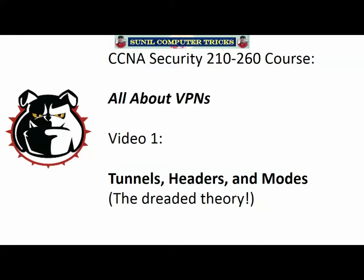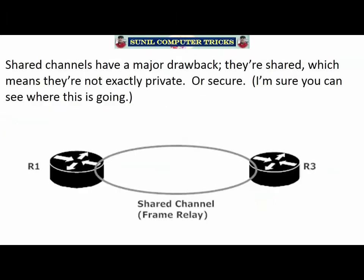The first question — maybe the first question you have — is why we VPN in the first place. The reason is that the shared channels we generally use between routers, between WANs or over our WANs, have a major drawback: they're shared. And if something is shared, privacy may not be the best, and it also may not be terribly secure. So I'm sure you already see where this discussion is going.